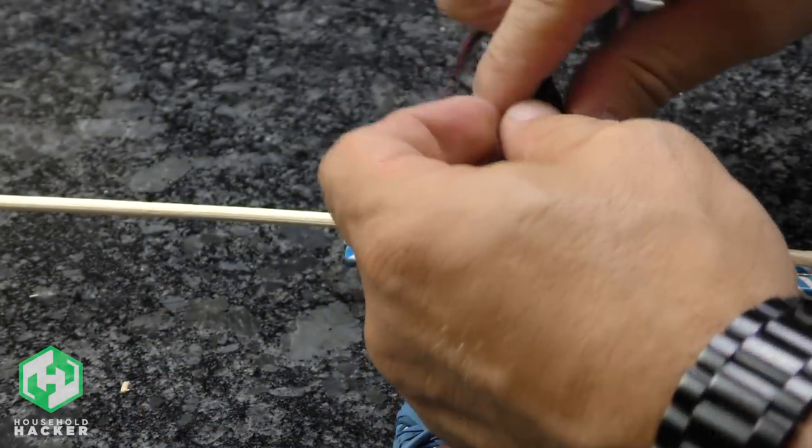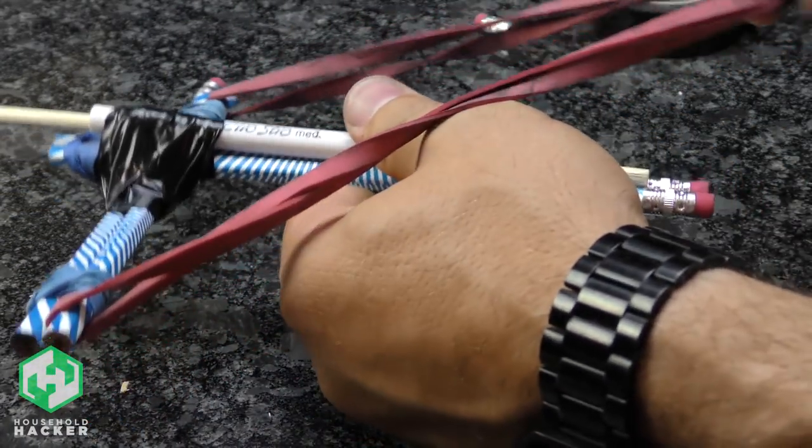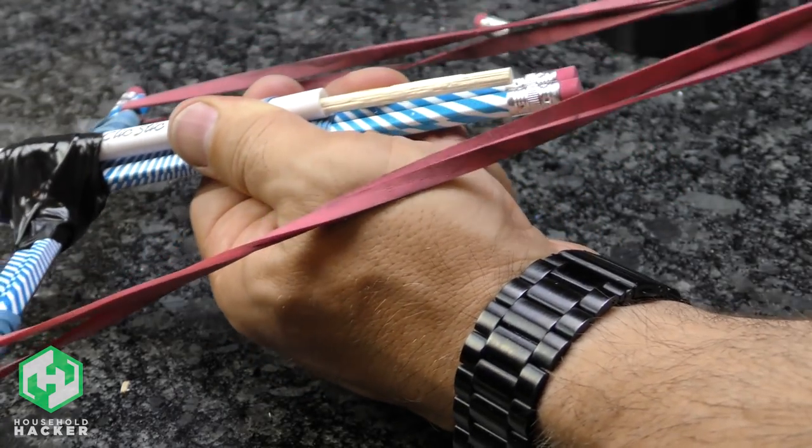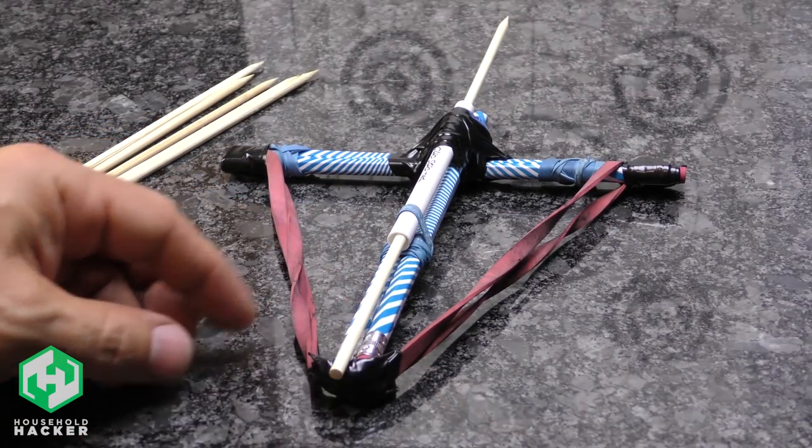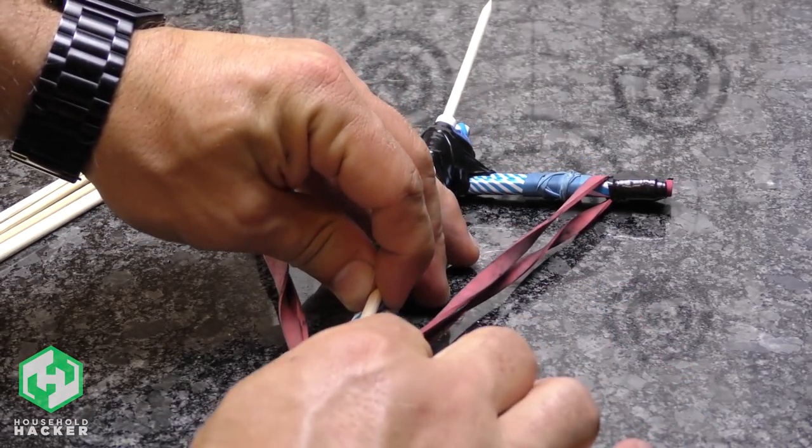Now just create a small ammunition pouch using tape or cardboard and tape. Once your pouch is complete, give your pencil crossbow a few tests by pulling the assembly back a few times. Now you're ready for some ammunition. Make sure you don't use anything that could hurt anybody and never aim it at people.